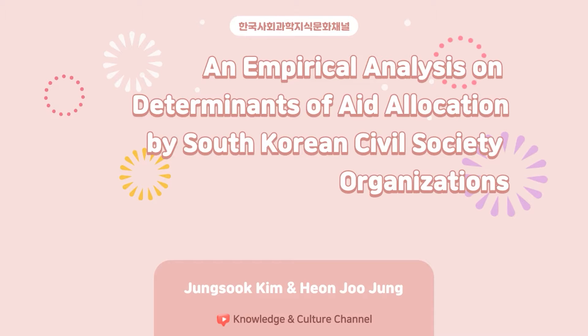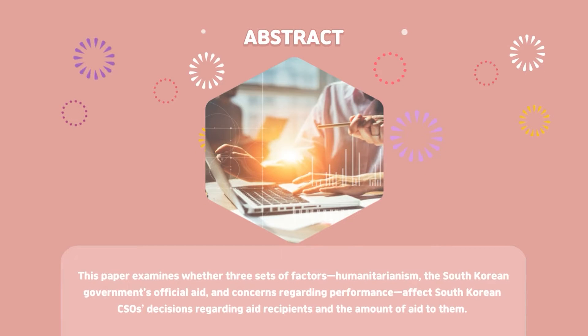This paper was written in 2021 by Jung-Suk Kim, Hee-In, and Joo-Young. It examines whether three sets of factors — humanitarianism, the South Korean government's official aid, and concerns regarding performance — affect South Korean CSOs' decisions regarding aid recipients and the amount of aid to them.